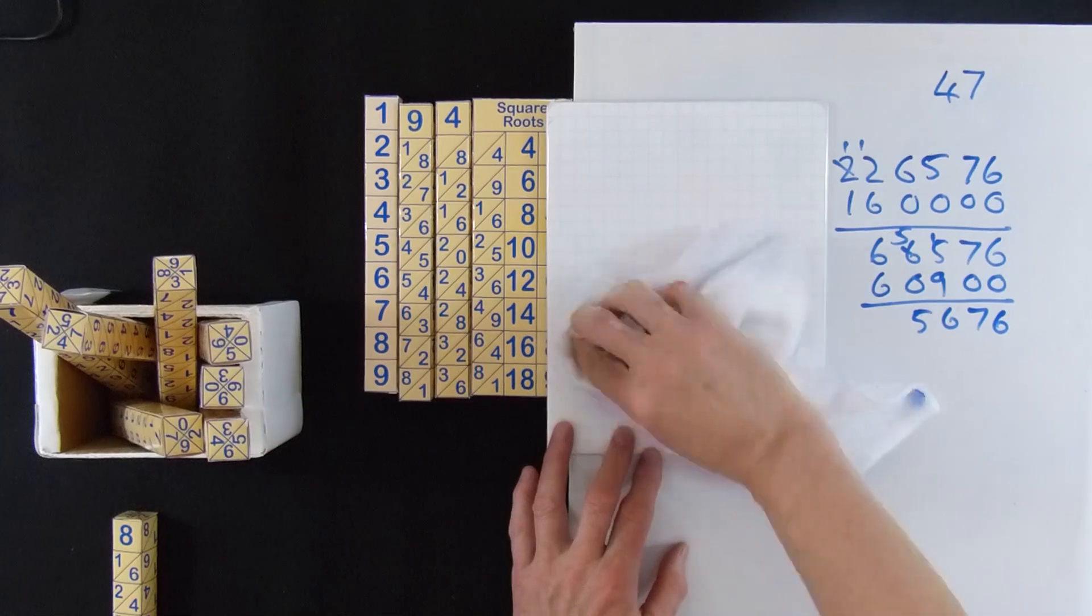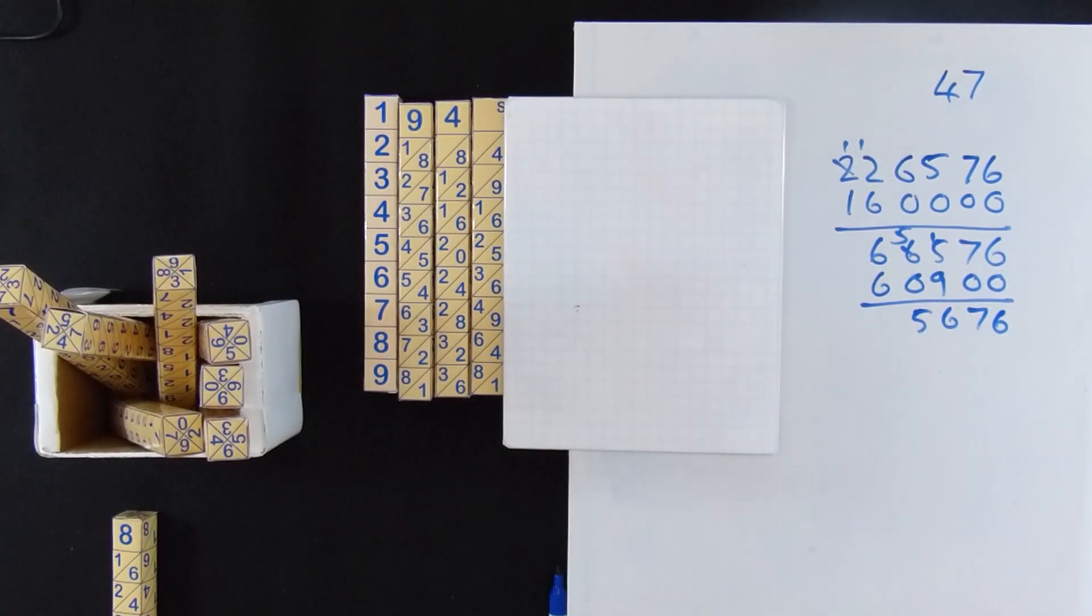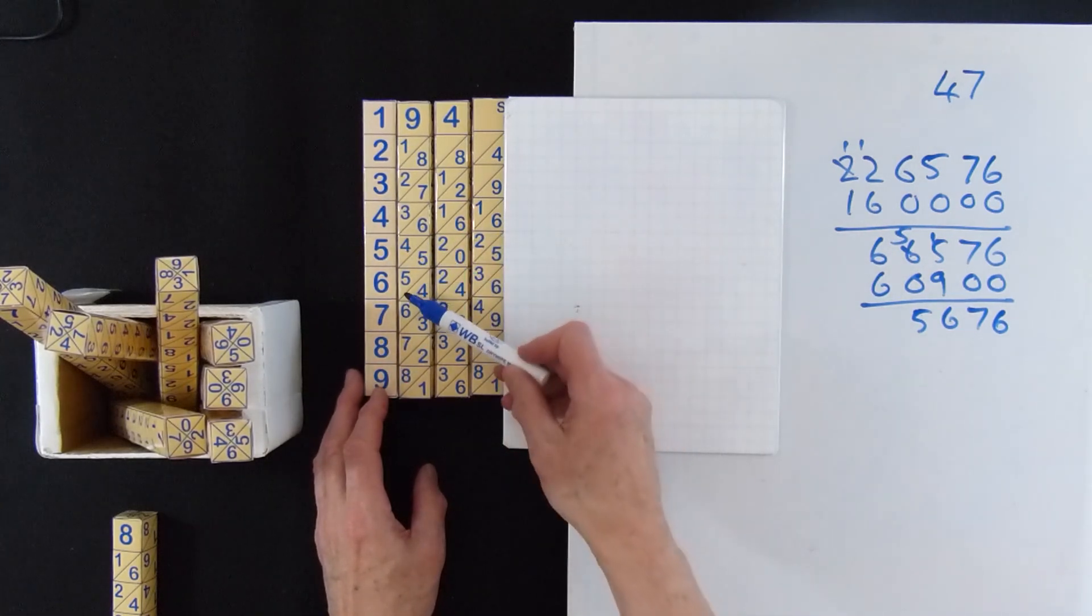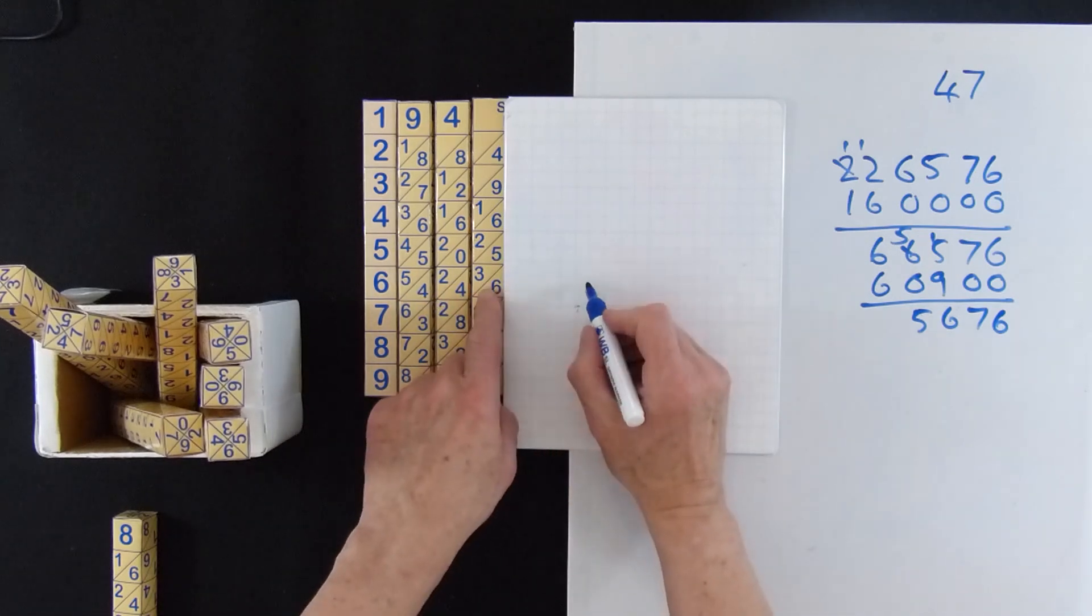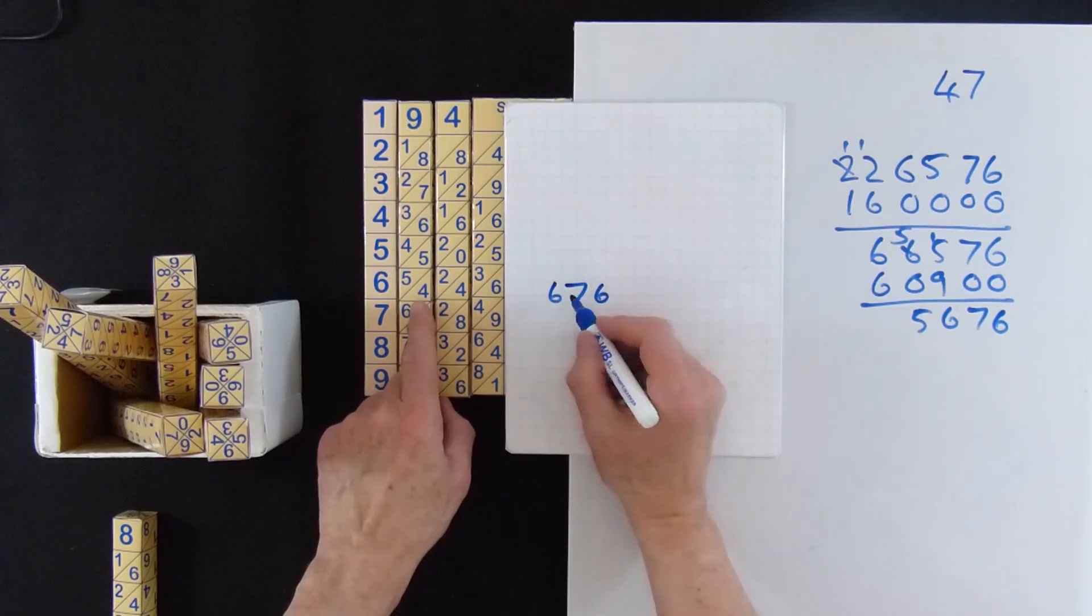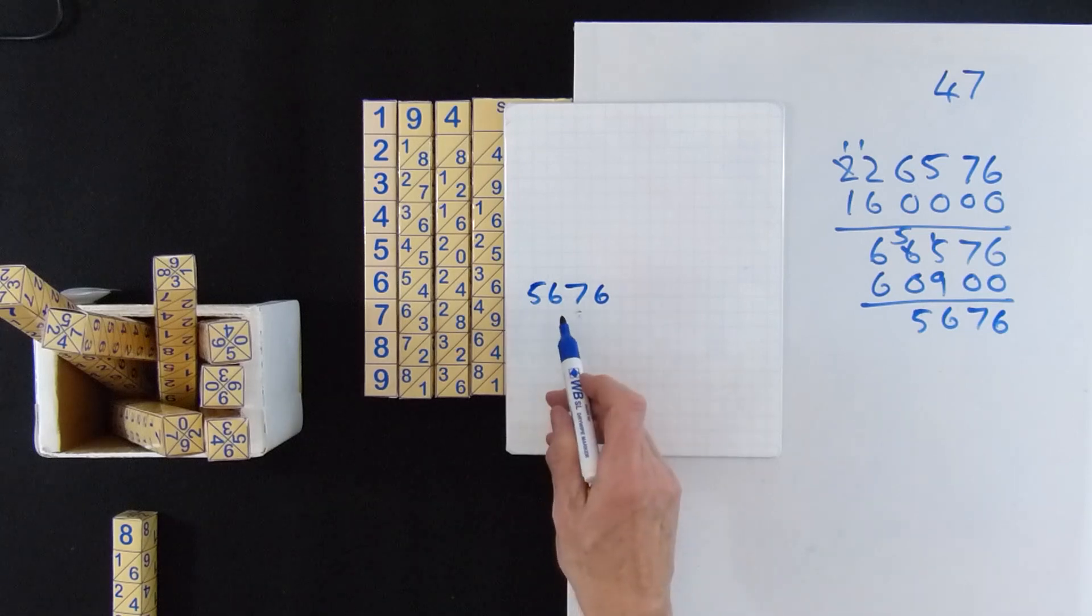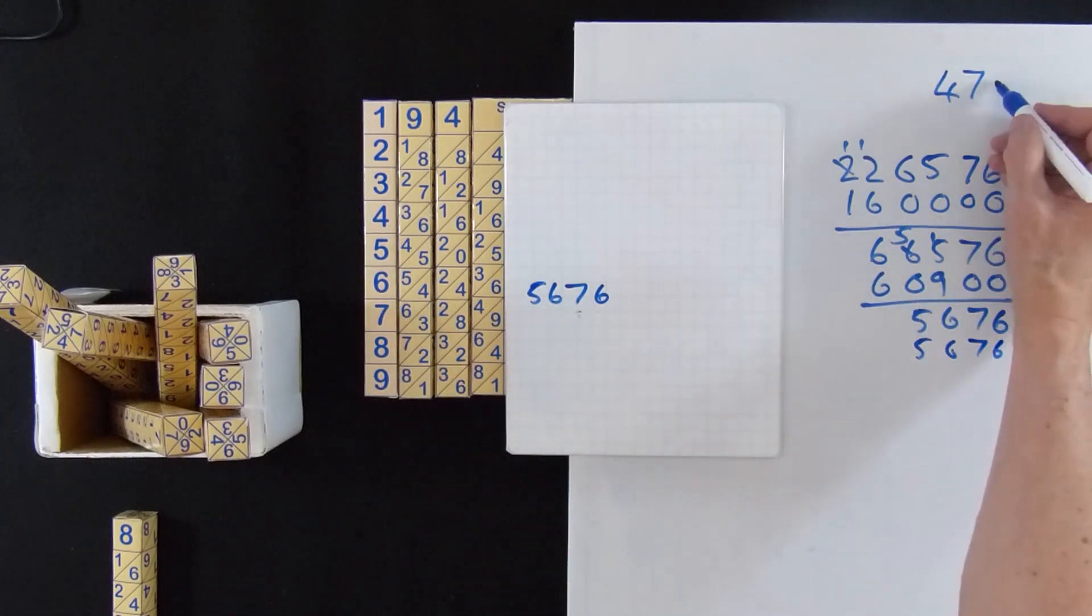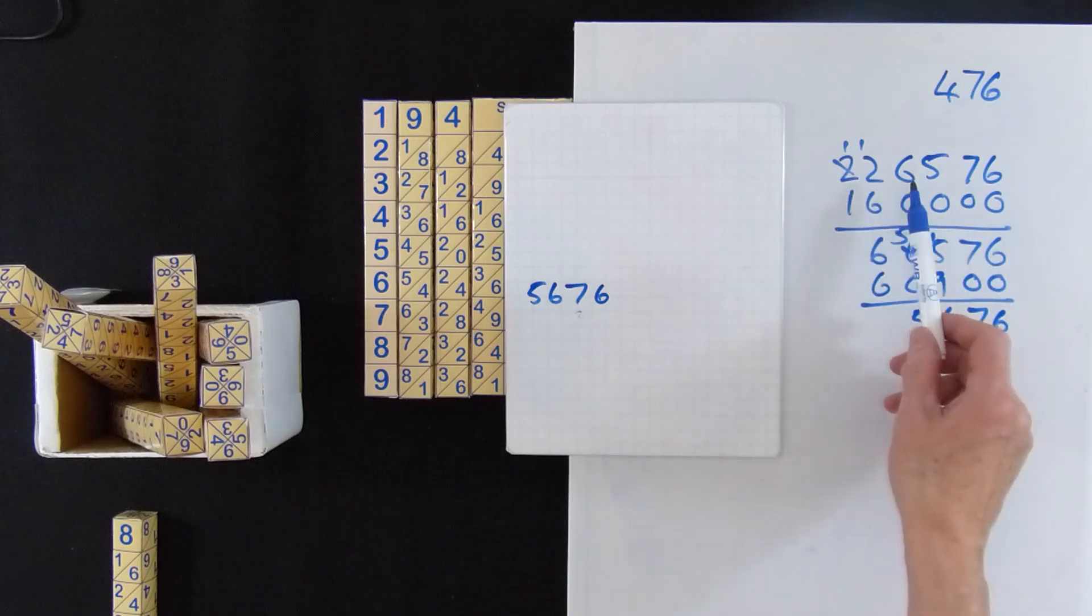Take away our old answers. Put it in there. And we're ready. We're looking at the whole number now, so it's 5676. So have a look down. And there you can see it's going to be 6. And we've got 5676. And that is 6. So the square root of 226,576 is 476.